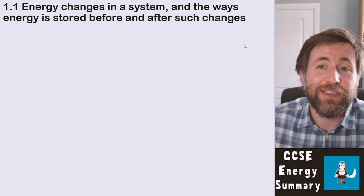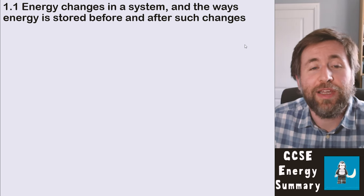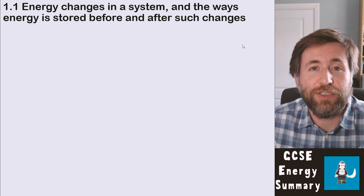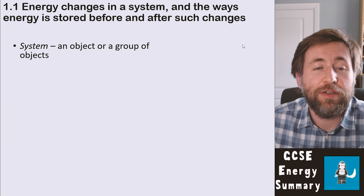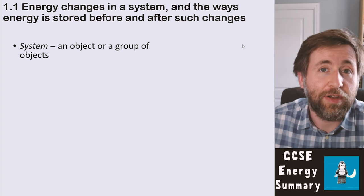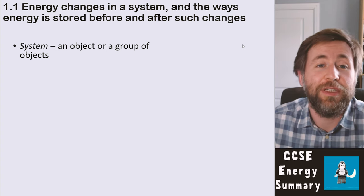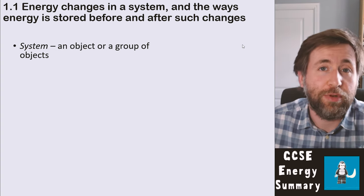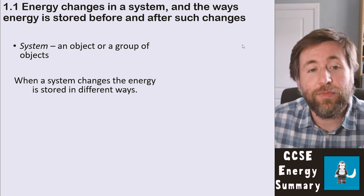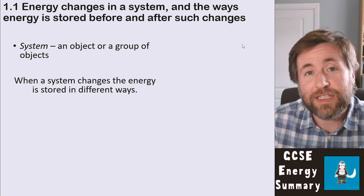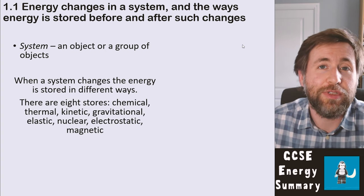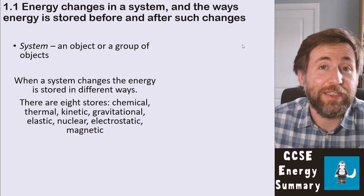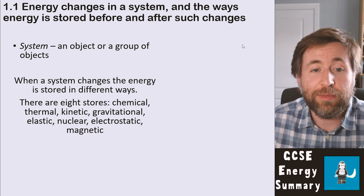Part one: energy changes in the system and the way that energy is stored before and after such changes. A system is an object or a group of objects. When a system changes, the energy is stored in different ways, and there are eight ways to store energy.